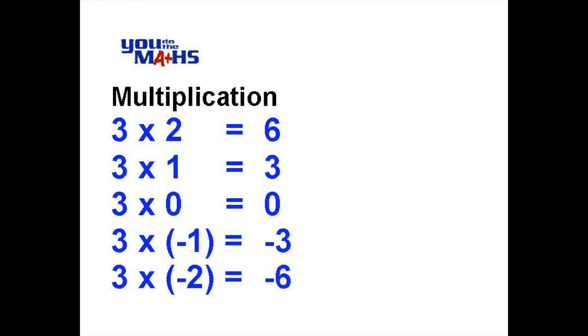So you can see from this table very quickly that 3 multiplied by a positive number ends up with a result that's exactly the same as 3 multiplied by the matching negative number, except the result is negative. For example, 3 multiplied by 2 is 6, and 3 multiplied by negative 2 is negative 6.